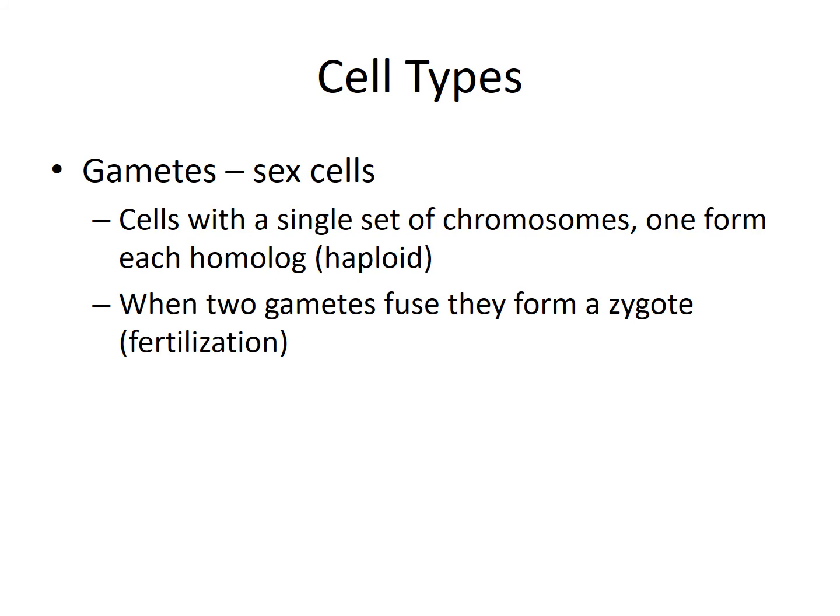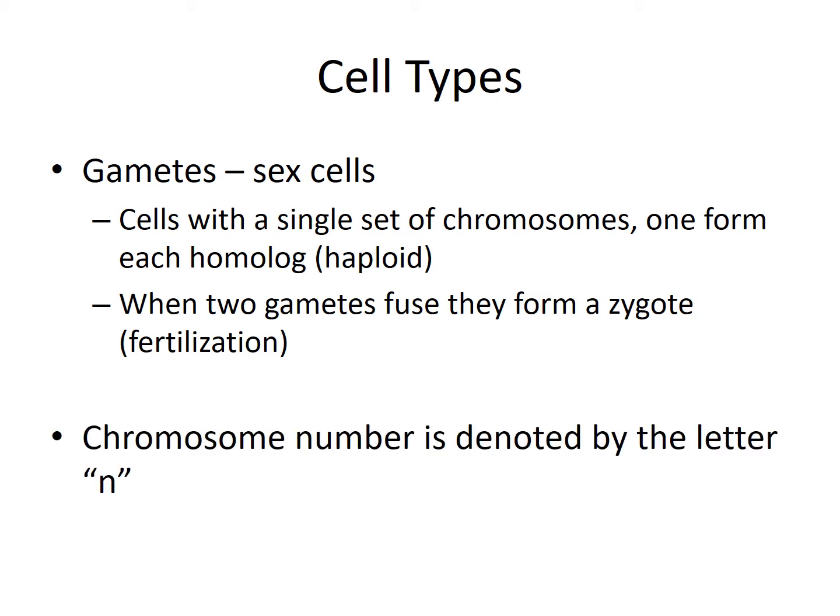Gametes are the specialized sex cells — haploid and genetically unique from each other. Gametes are found in male sperm and female eggs. When sperm and egg fuse together, they create what's called a zygote, and that process is called fertilization. That's the basis behind sexual reproduction. Humans have 23 pairs of chromosomes. In a haploid cell we say there's 1n chromosomes, so 1 times 23 means 23 chromosomes in a gamete.